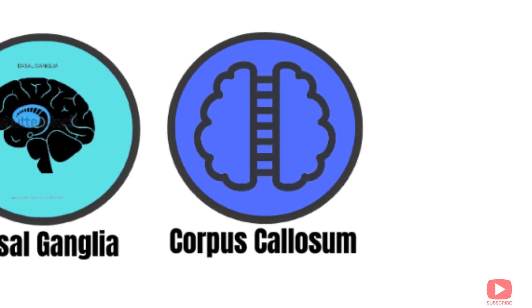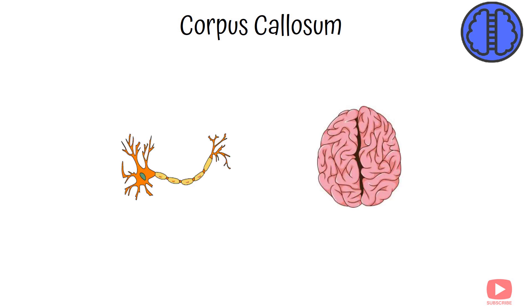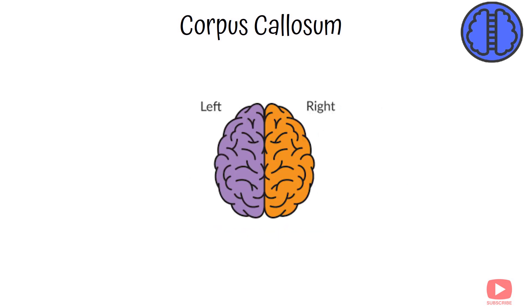Corpus callosum. The corpus callosum is a thick band of nerve fibers that connects the two hemispheres of the brain, allowing them to communicate. It's essential for integrating functions between the left and right sides of the brain.